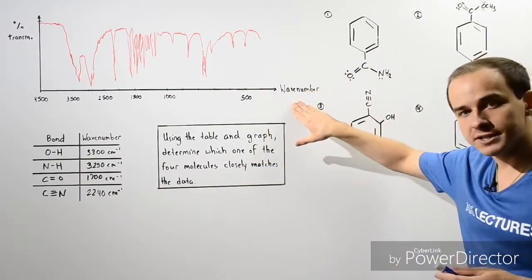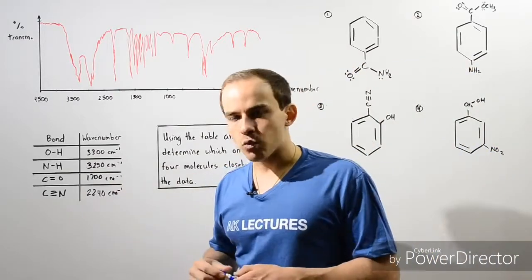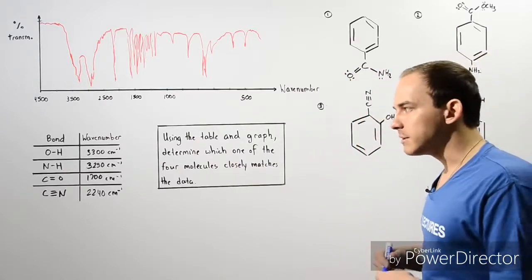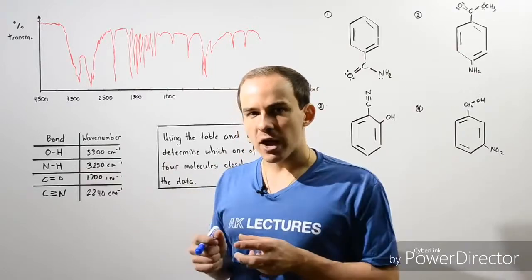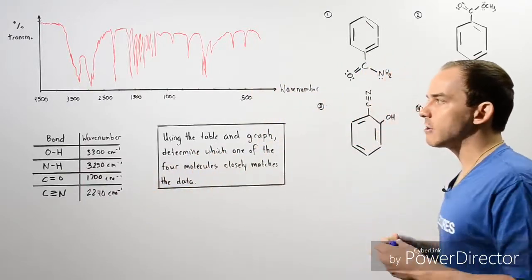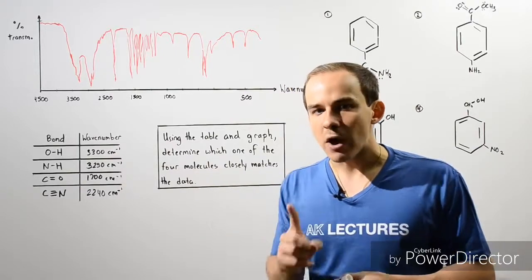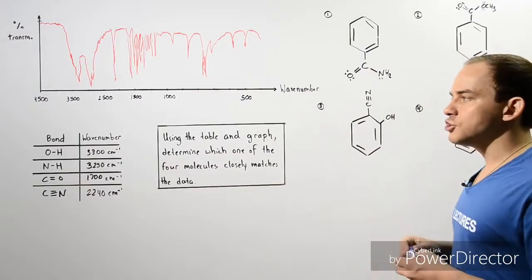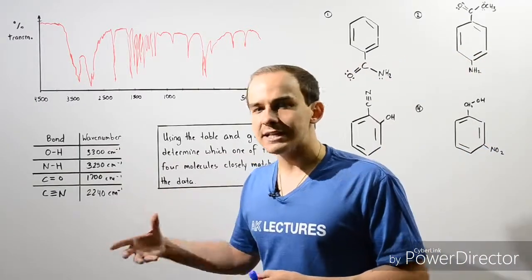The greater the frequency of oscillation of our chemical bond, the greater our wave number. When we take infrared electromagnetic waves and direct them at our chemical bonds, if the energy of that wave matches the energy of oscillation of our chemical bond, then that chemical bond will absorb that energy. However, if the frequencies do not match, none of the energy will be absorbed by the chemical bond and our wave is said to be transmitted.